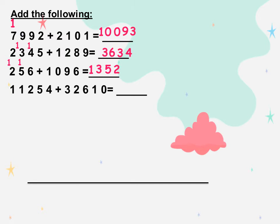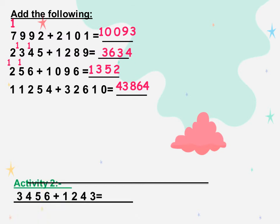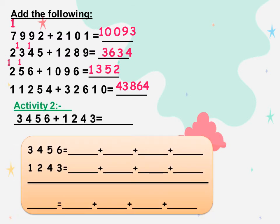The next: 11,254 plus 32,610. Ones with ones: 4 plus 0 equals 4. 5 plus 1 equals 6. Hundreds with hundreds: 2 plus 6 equals 8. 1 plus 2 equals 3. And 1 plus 3 equals 4. So the result is 43,864. Activity number 2.